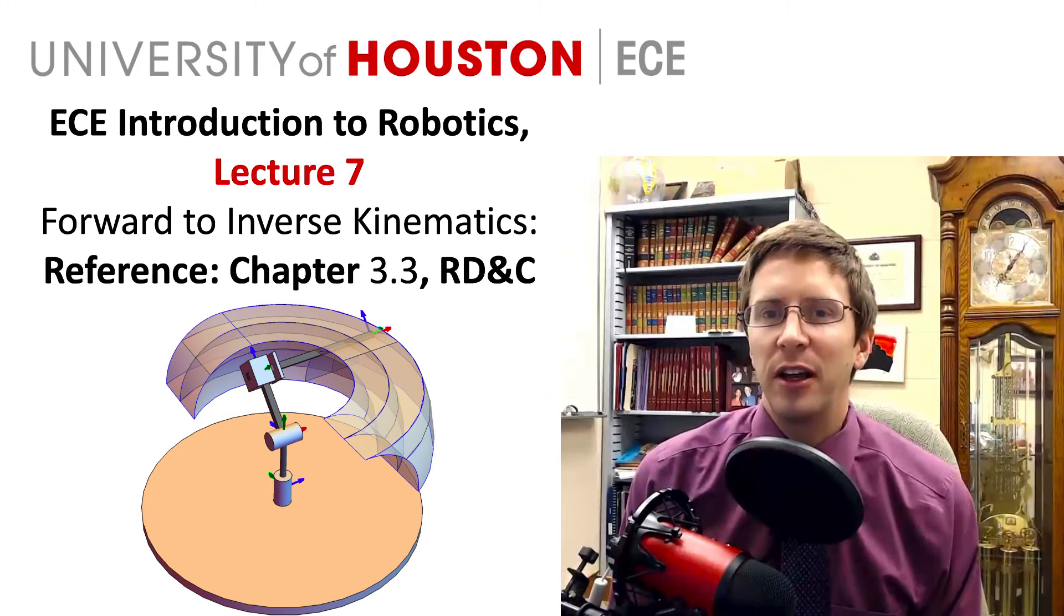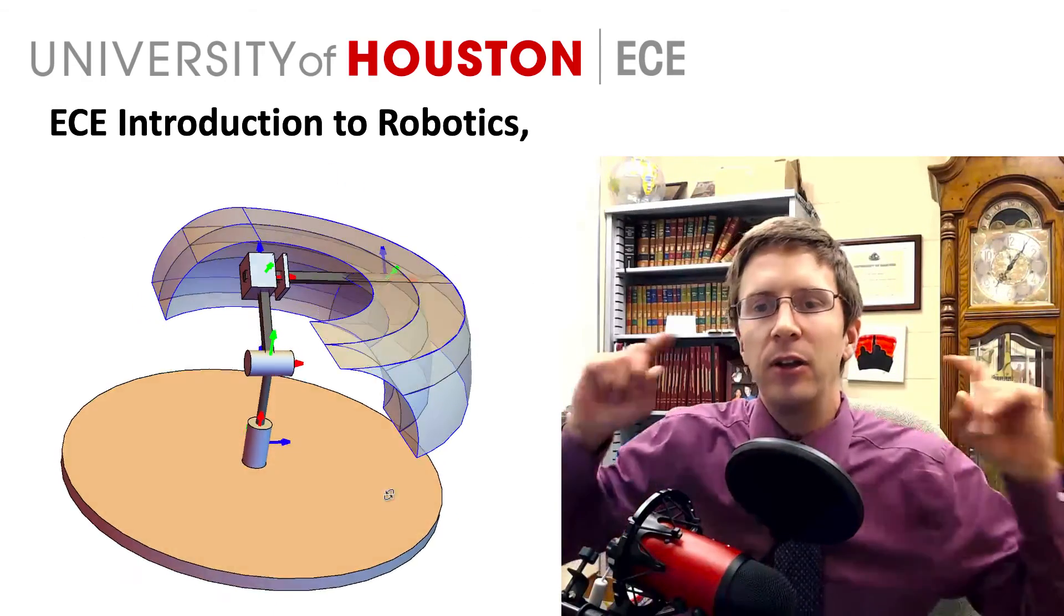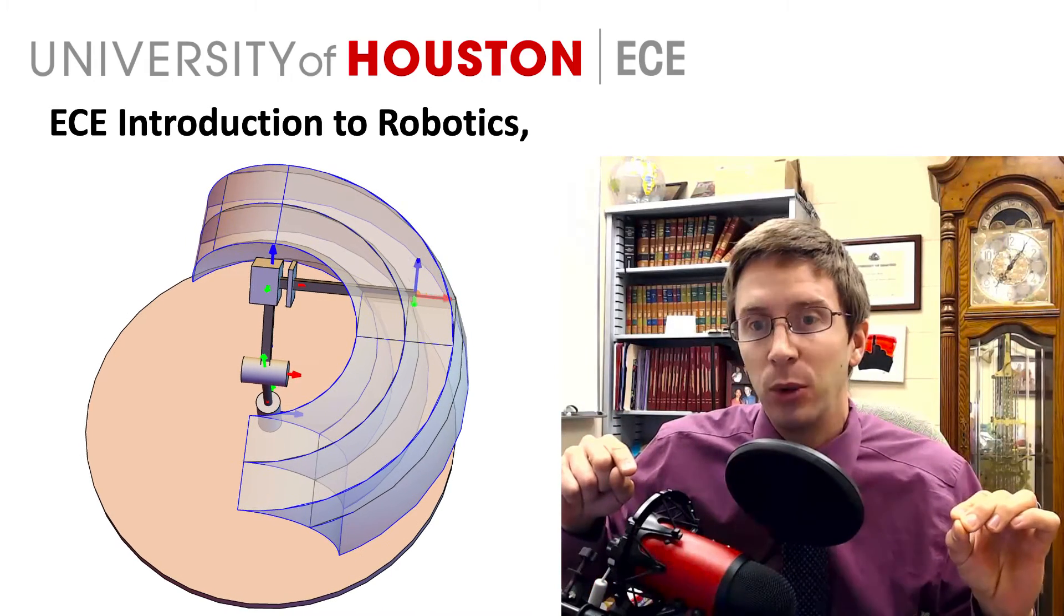In lecture 7, we're going to look at the connection between forward and inverse kinematics, and we're going to use this example of a three-link robot here where it has two revolute joints and a prismatic joint.